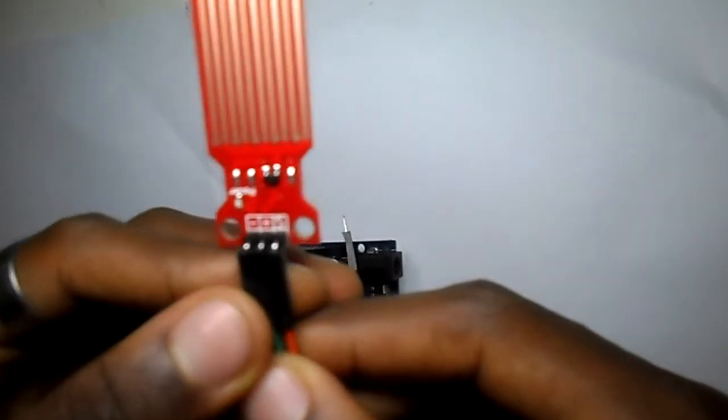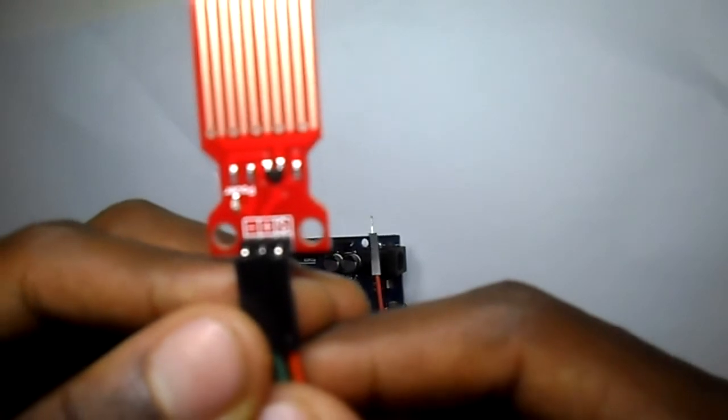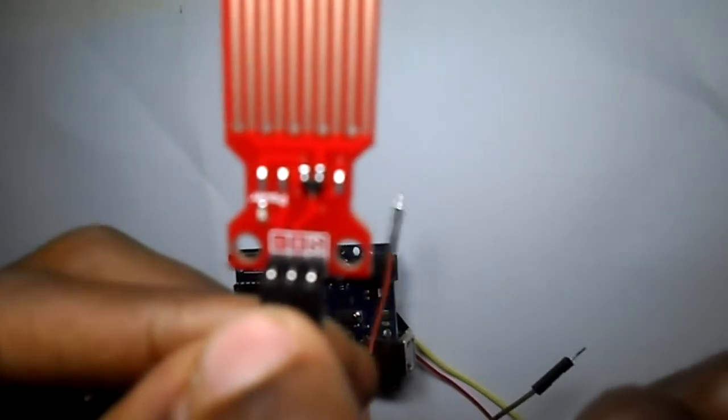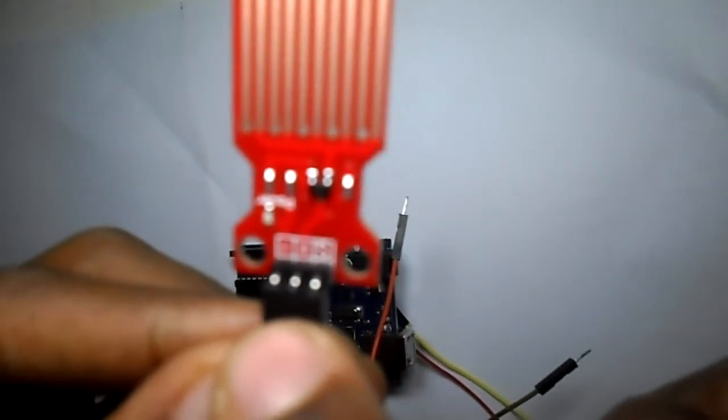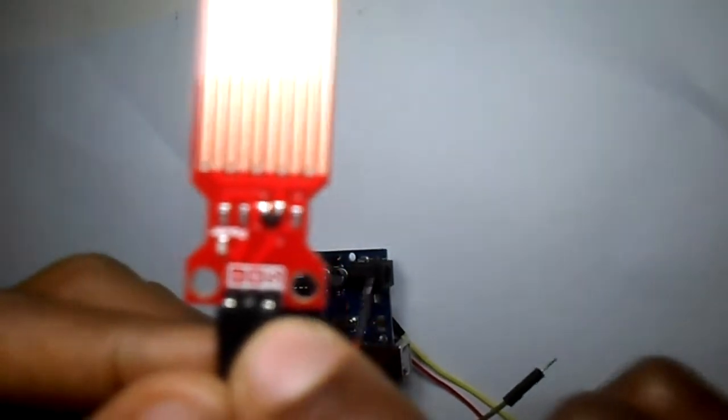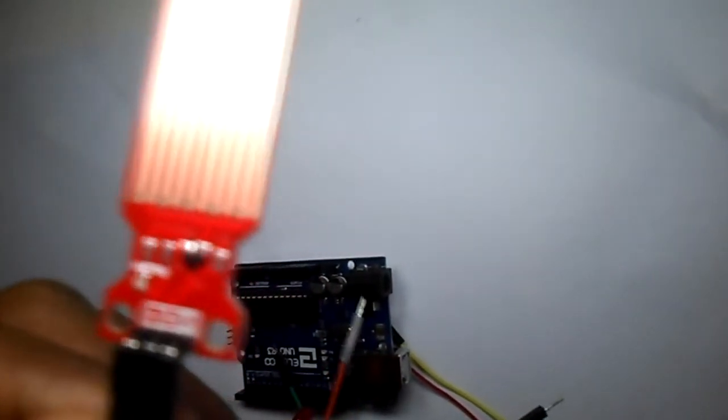Then after, to wire up the water sensor, it is very easy. You have a negative side that goes to the ground. Positive side that goes to 5 volt. And the S, that one goes for the data.